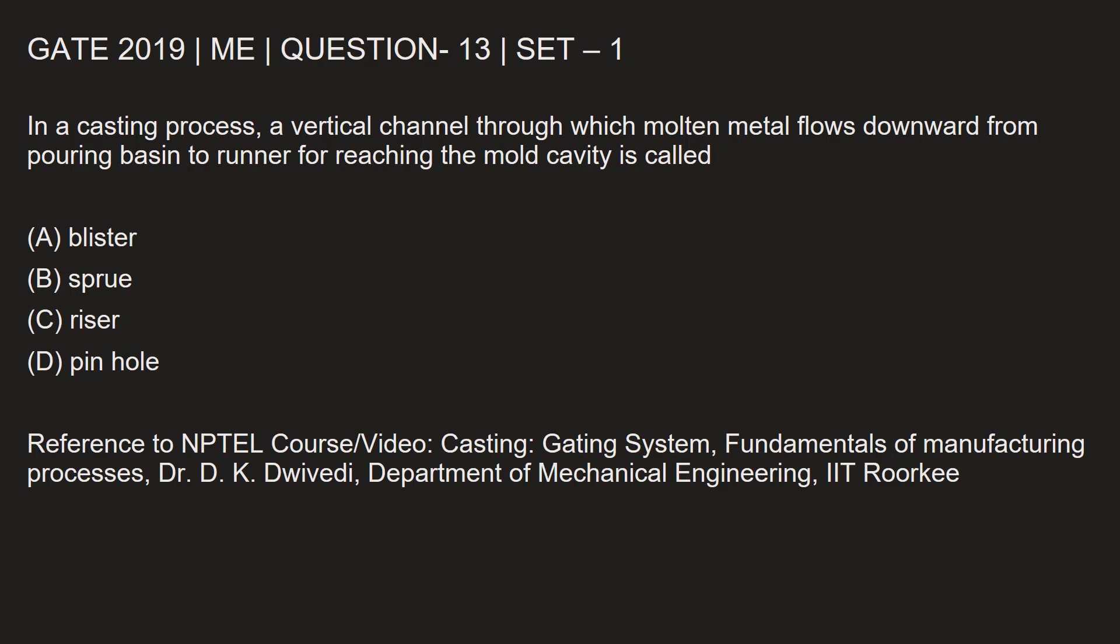This question is from GATE 2019 mechanical engineering paper, set 1, question number 13. In a casting process, a vertical channel through which molten metal flows downward from a pouring basin to runner for reaching the mold cavity is called... Let's find out.